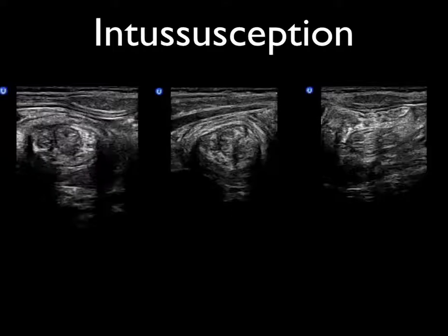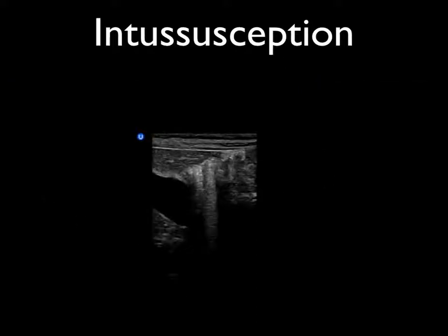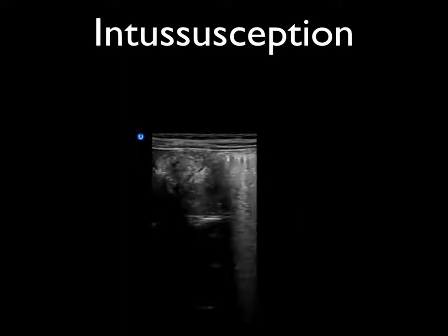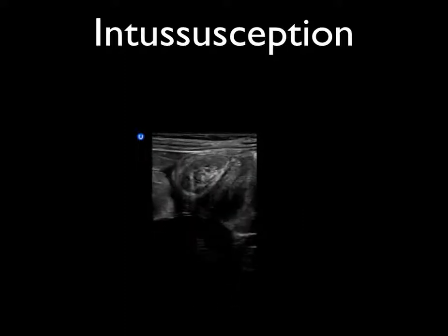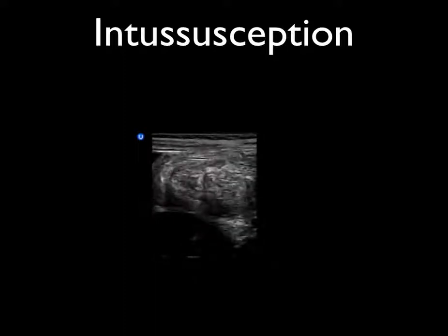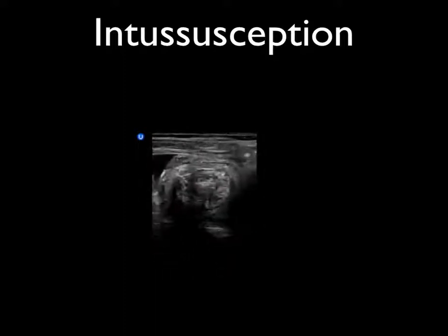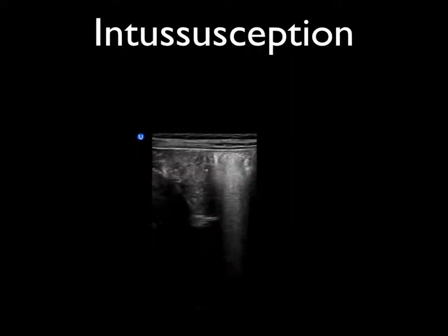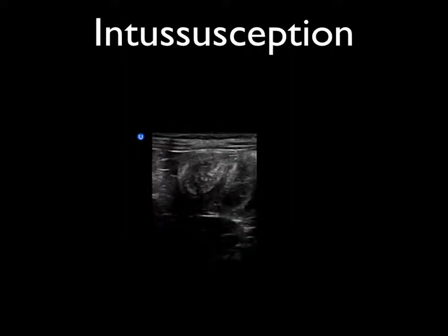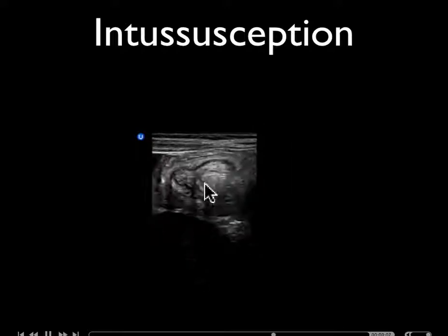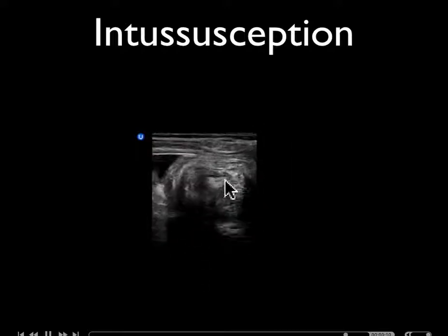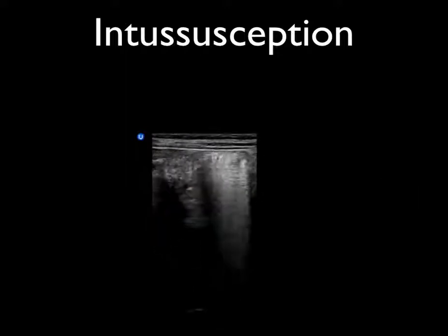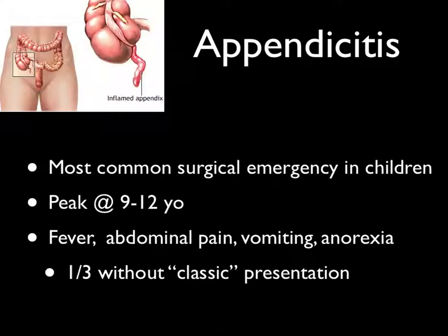Here's another straightforward case of intussusception. We see layers of bowel along with the hyperechoic segment around the inner layer. This is the actual video of this patient — we're around the epigastric area under the liver, moving to the right upper quadrant where the ascending and transverse colon come together. We can see the intussusception starting to appear right there — here's the long axis of it, and now we're in short axis at the end of it.